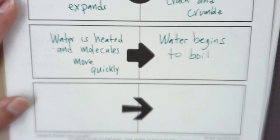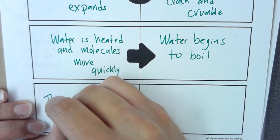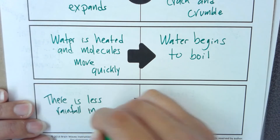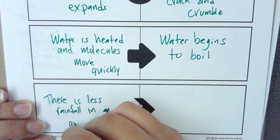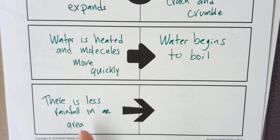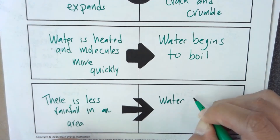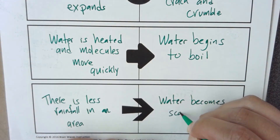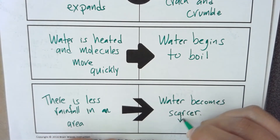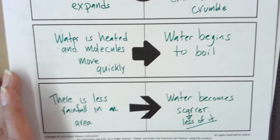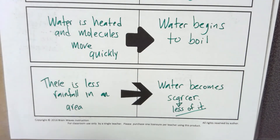Our last one. We're going to write: there is less rainfall in an area. So if there's less rainfall in an area and no water, what's going to be the effect? Water becomes scarcer — meaning there's less of it. Please make sure that you have your cause written down and your effect.